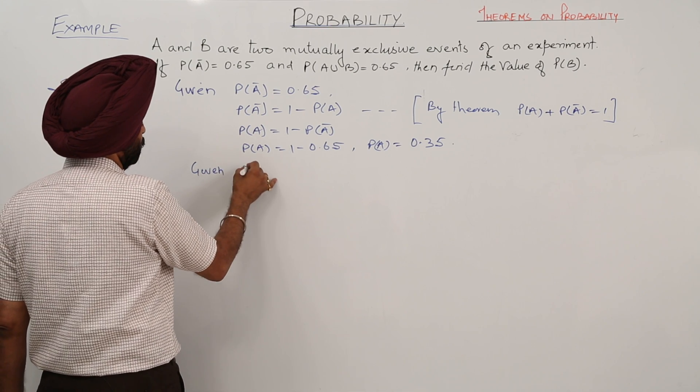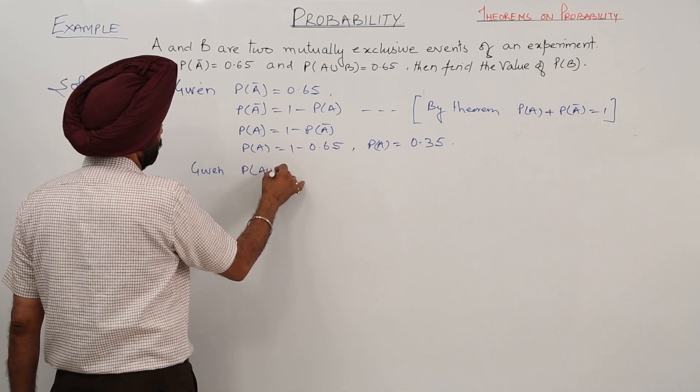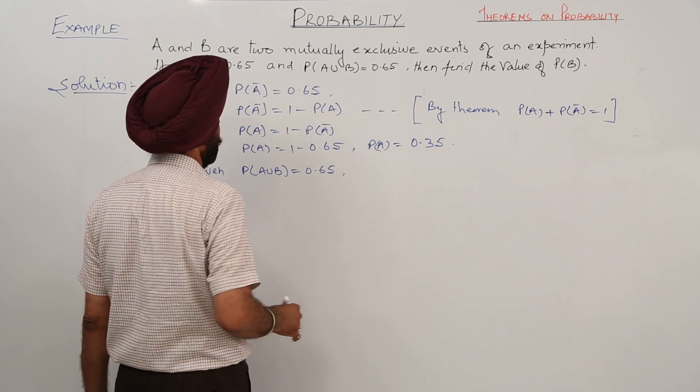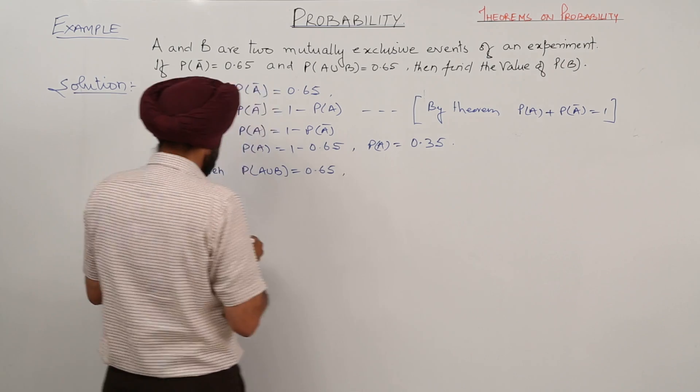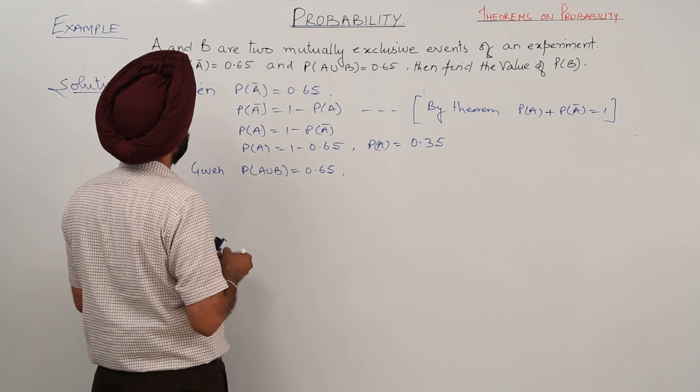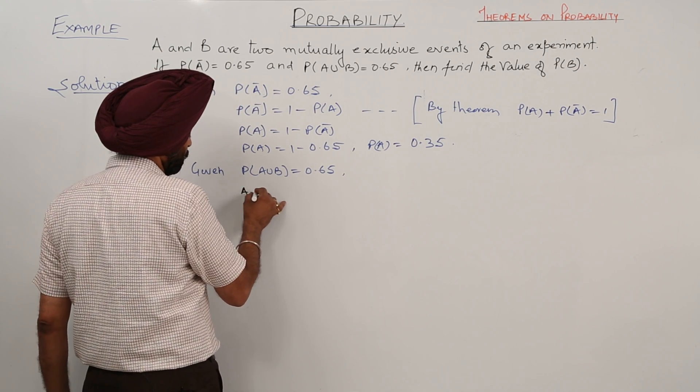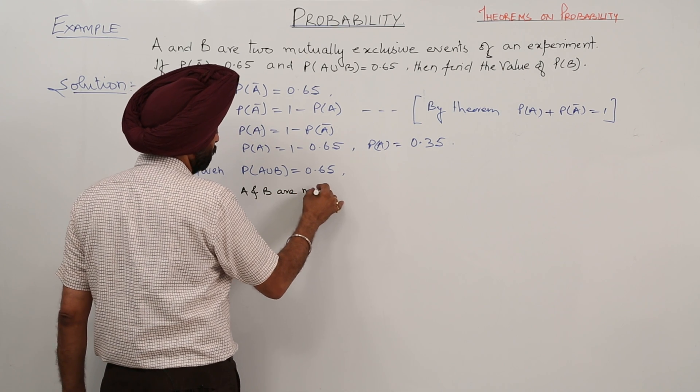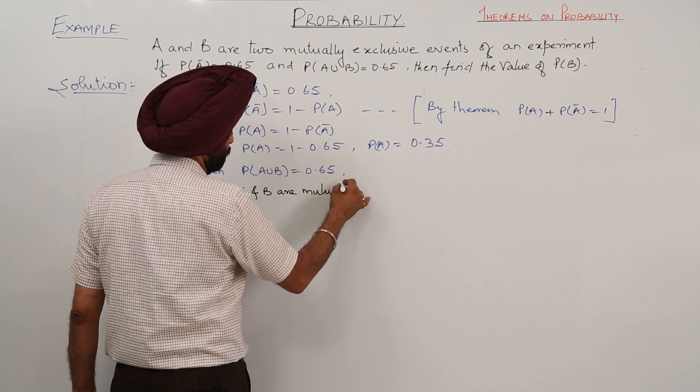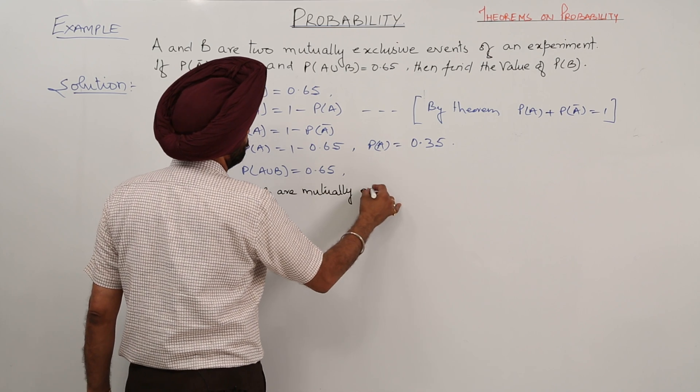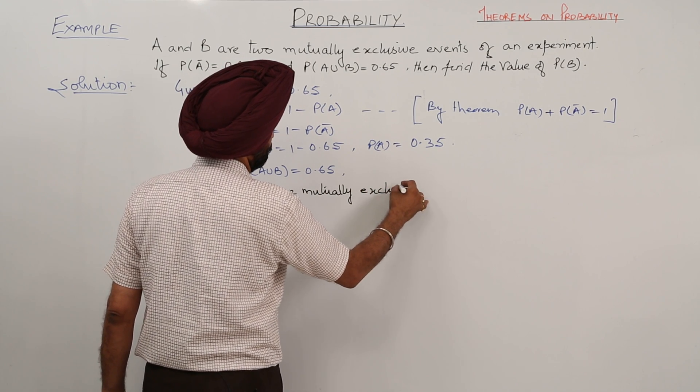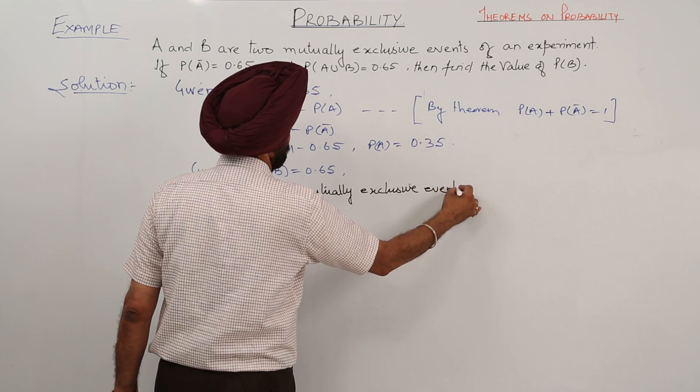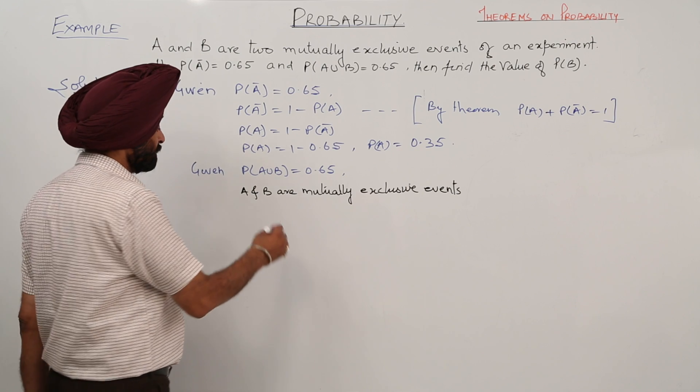Next given: P(A or B) is equal to 0.65. What else is given? A and B are mutually exclusive events.